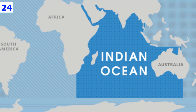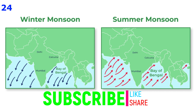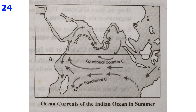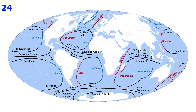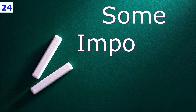The currents of the Indian Ocean differ from those of the Atlantic and Pacific oceans. This is mainly because of the enclosed nature of the sea and the influence of the monsoon winds. In the northern part of the Indian Ocean, the direction of the current changes according to the season. In summer, when the southwest monsoon blows, the current flows westward. In winter, when the northeast monsoon blows, the current flows eastward. In the southern part of the Indian Ocean, the currents are similar to those in the southern part of the Atlantic and Pacific oceans.